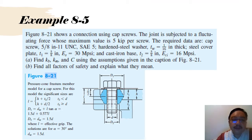Example 8-5 tells you about Figure 8-21. It shows a connection using cap screws. The joint is subjected to a fluctuating force whose maximum value is 5 kip per screw. The required data: cap screw 5/8 inch UNC SAE 5, hardened steel washer, TW is 1/16 inch thick steel cover plate T1, L is 5/8 inch, Young's modulus of the screw ES is 30 MPa, and cast iron base T2 is 5/8 inch with ECI 16 MPa.